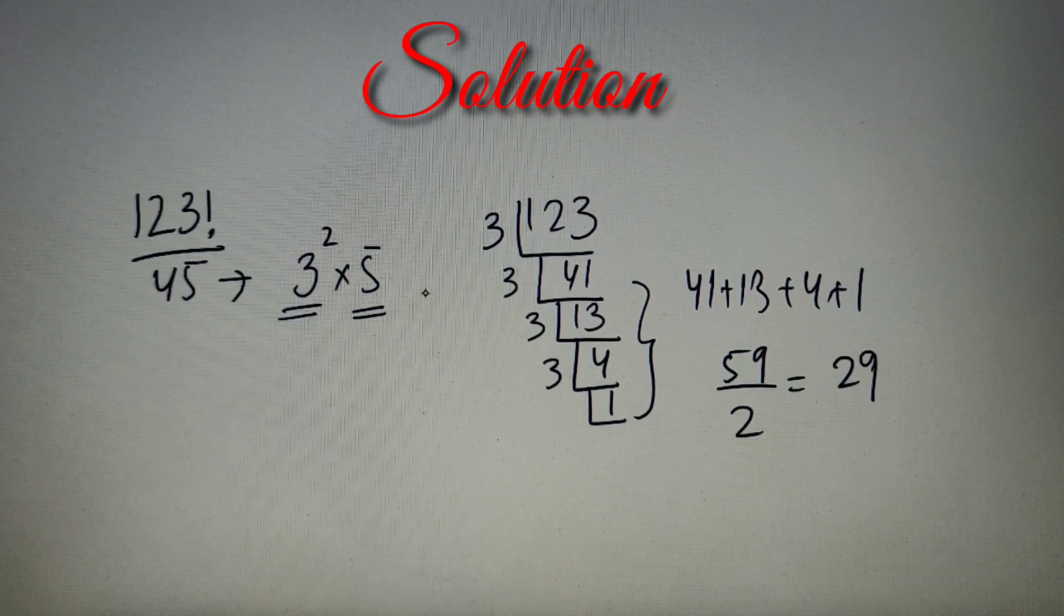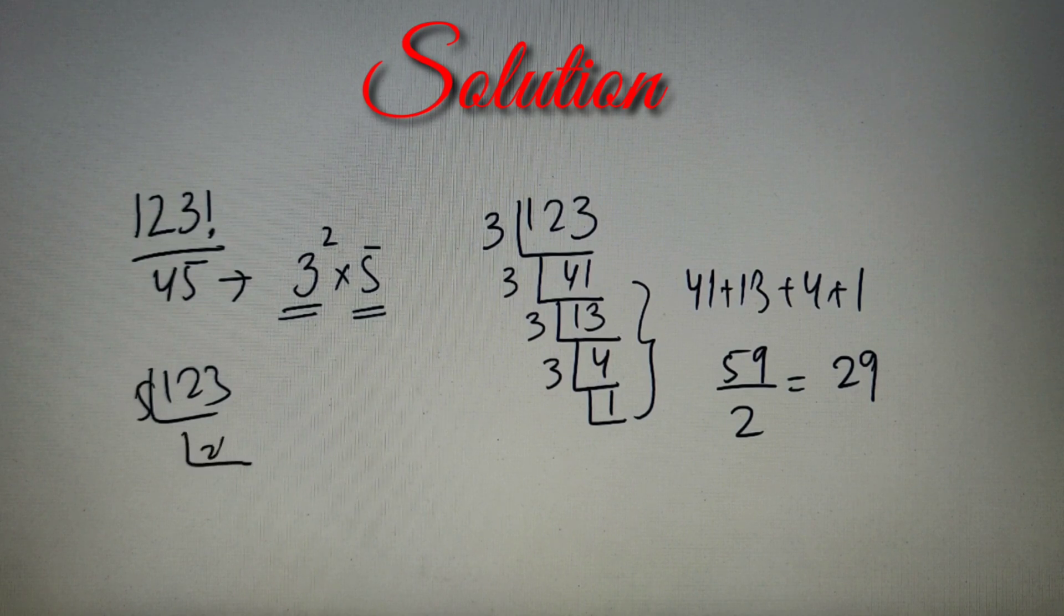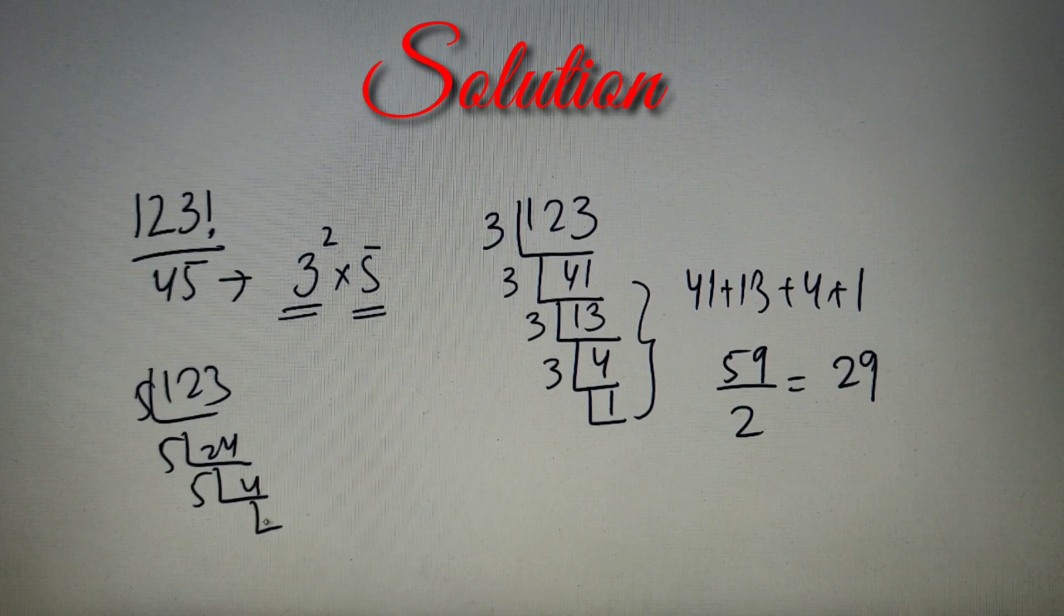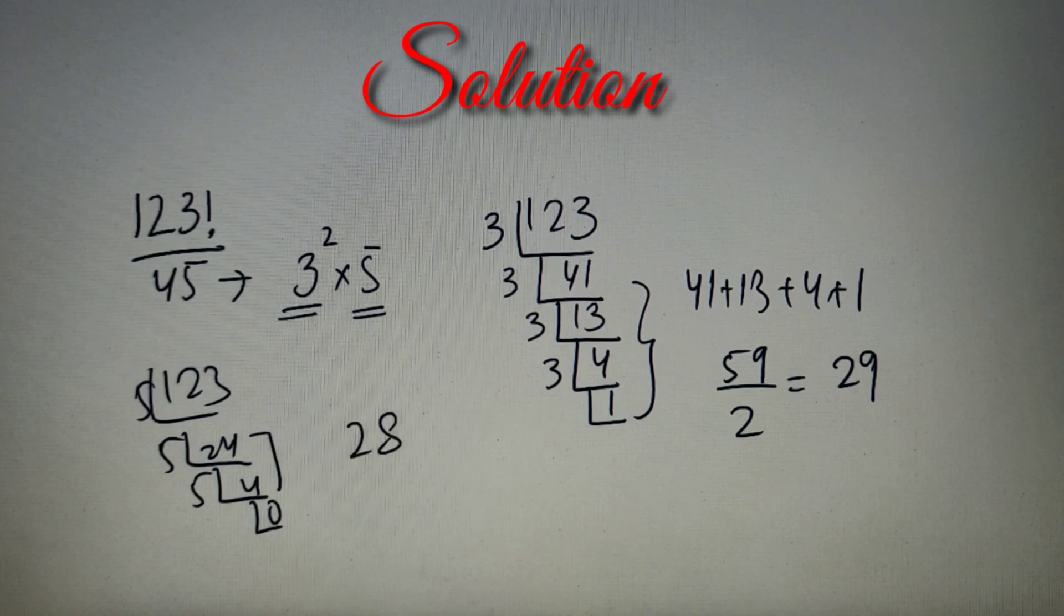Now we'll find out the highest power of 5 in 123 factorial and we'll take the lower of the number. 123 by 5 will give us 24. 24 by 5 will give us 4, and 4 upon division by 5 will give us 0. So 24 plus 4 is equal to 28.